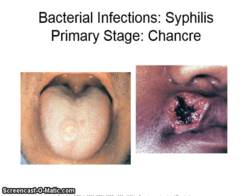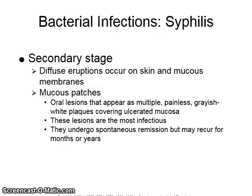The primary stage of syphilis presents with the chancre. The secondary stage will show diffuse eruptions on skin and mucous membranes, and mucous patches in the oral lesions that appear as multiple, painless, grayish-white plaques covering ulcerated mucosa. These lesions are the most infectious. They undergo spontaneous remission but may recur for months or years.